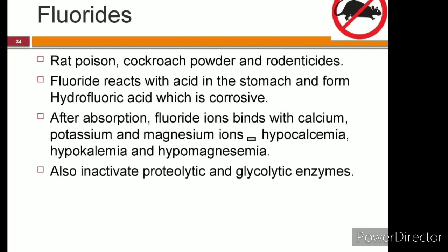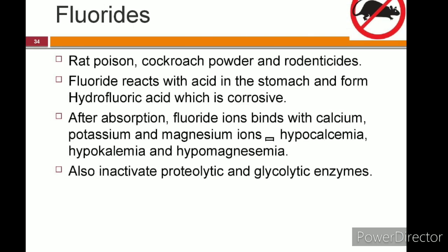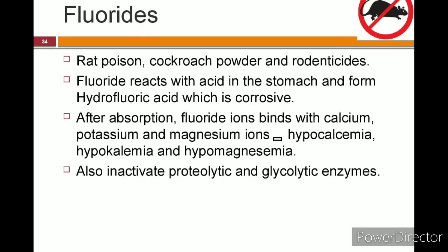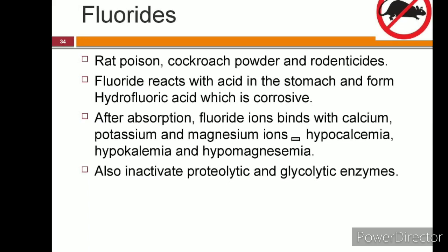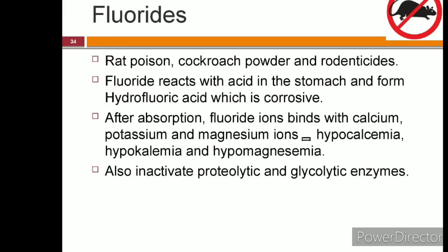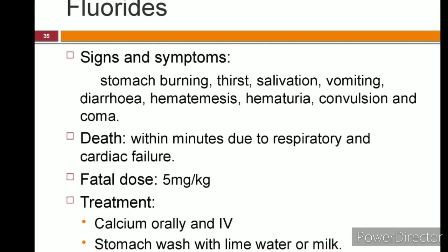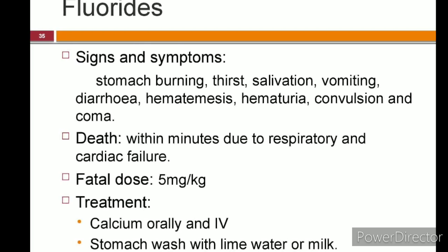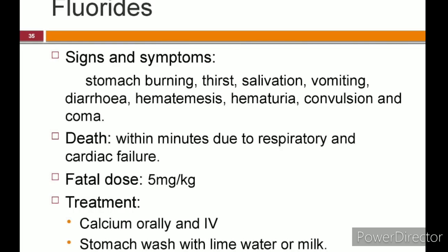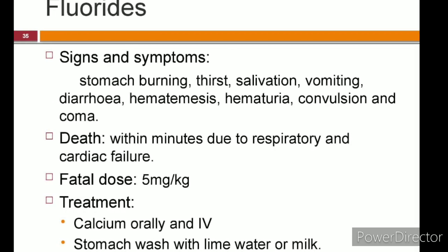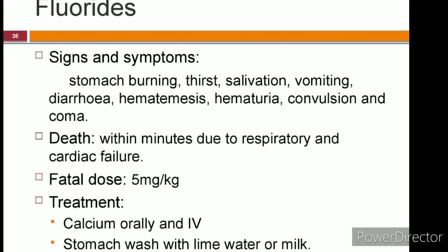Fluorides are commonly used as rat poison and cockroach powders — children may accidentally consume these compounds. These compounds react with stomach acid to form hydrofluoric acid, which is corrosive. They also bind with calcium, potassium, and magnesium ions, causing hypocalcemia, hypokalemia, and hypomagnesemia. Signs and symptoms include burning pain in the stomach, increased thirst, salivation, hematemesis, hematuria, coma, and convulsion. Death may occur within a few minutes due to respiratory and cardiac failure. The fatal dose is 5 mg per kilogram body weight. Treatment includes calcium given orally or intravenously, and stomach wash with lime water or milk.